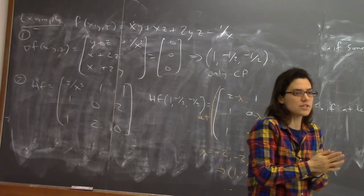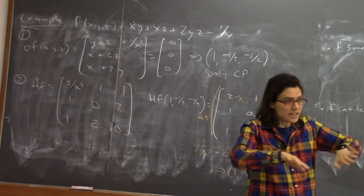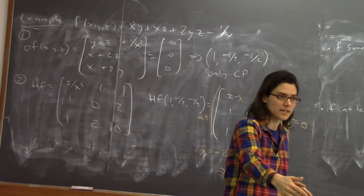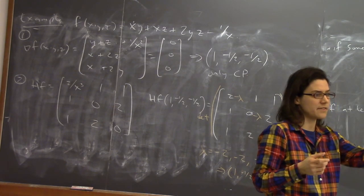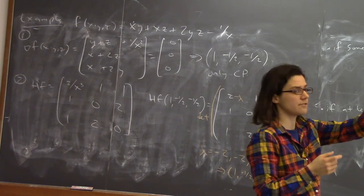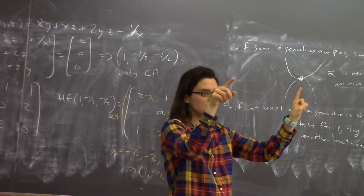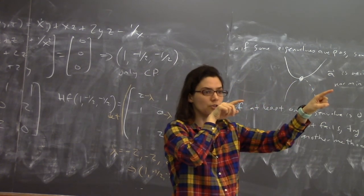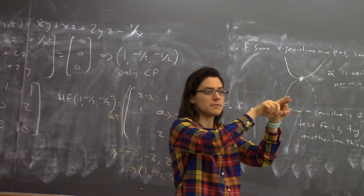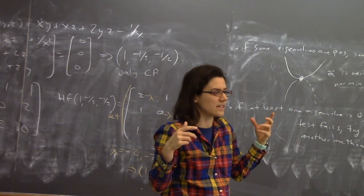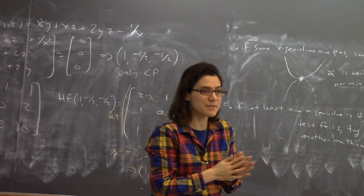Since some eigenvalues are negative (−2, −2) and one is positive (2), the point (1, −1/2, −1/2) is a saddle. For a function of two variables, calling a point a saddle makes geometric sense — the surface literally looks like a saddle with higher and lower points. For a function of three variables, think of it as giving temperature at a point in space. Our critical point means there are two directions where temperature gets colder (negative eigenvalues) and one direction where temperature gets warmer (positive eigenvalue). It's a saddle, but as a metaphor.